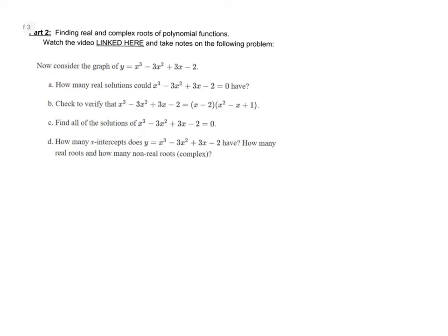The function we're starting with is y equals x cubed minus 3x squared plus 3x minus 2. And the very first question is how many real solutions could that function have when we're looking for the zeros? Notice we have plugged in zero for y, which means we're looking for those x-intercepts. And when we're working to answer that question, we really want to focus on the degree because the number of zeros that our function is going to have matches the degree.